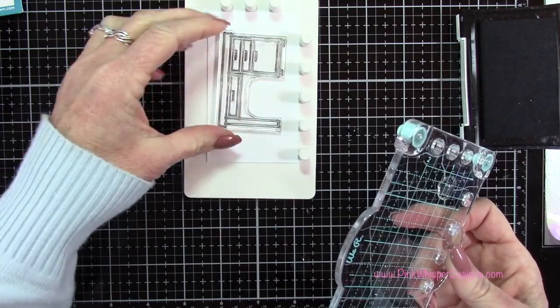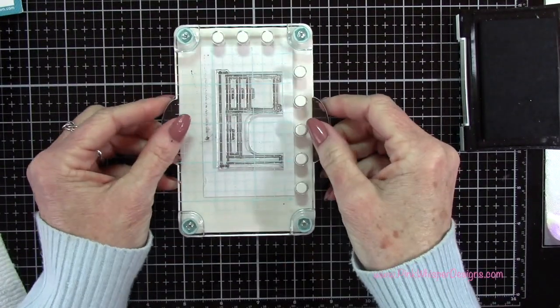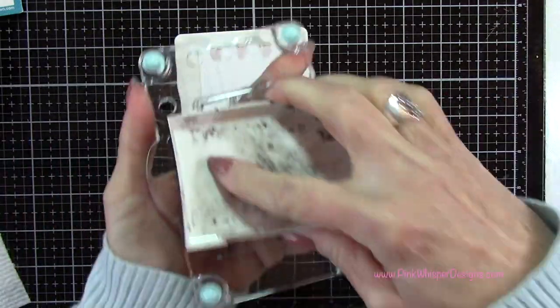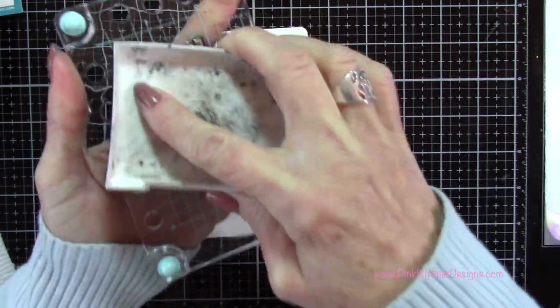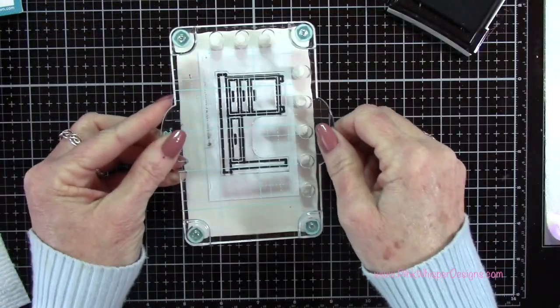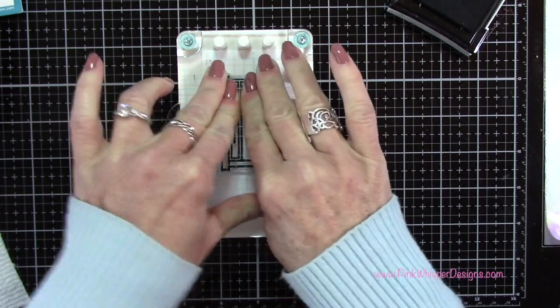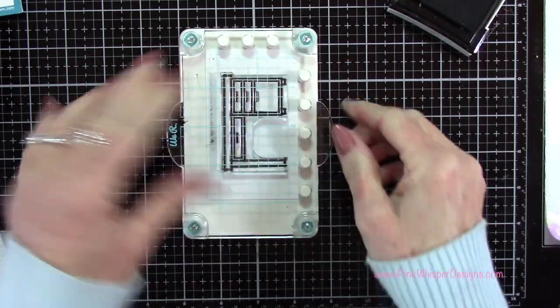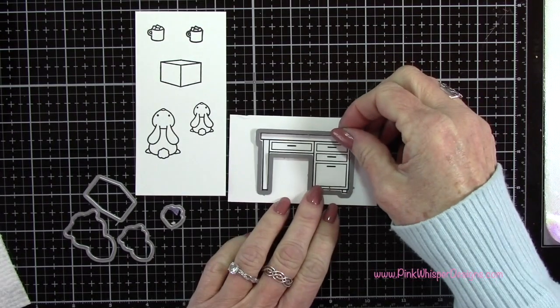Now I'm going to do the same thing for this little desk. I'm going to press down the grid and pick up that stamp, then ink that up and set it on top of this platform and press it down. Again, if I needed to stamp it again it's a perfect alignment so I can ink it up and stamp it again if I need to.